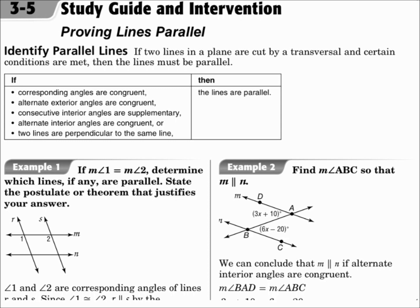If certain angle pairs are congruent, then the lines are parallel. If corresponding angles are congruent, the lines are parallel. If alternate exterior angles are congruent, then the lines are parallel. And if alternate interior angles are congruent, the lines are parallel. If consecutive interior angles are supplementary, then the lines are parallel. And finally, if two lines are perpendicular to the same line, then those lines are parallel.